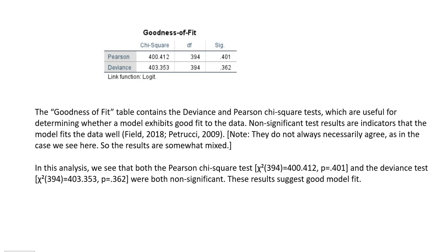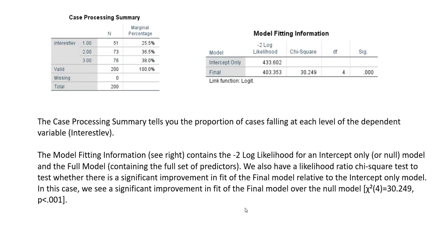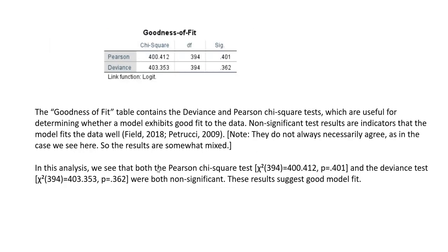The goodness of fit table contains the deviance and Pearson chi-square tests, which are also useful for evaluating overall model fit. Non-significant test results are indicators that the model fits the data well. So to recap: if the likelihood ratio test under model fitting information is statistically significant, that's an indicator of good model fit relative to the null. The deviance and Pearson tests are additional fit tests, and if they are non-significant, the model is a good fit. It's not always the case that they will agree, but most of the time they probably will. Between these test results, we have evidence that our model is fitting the data well.